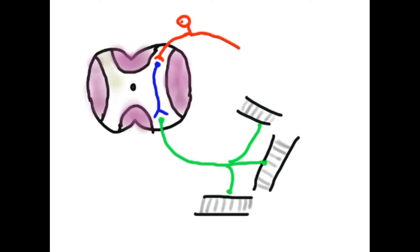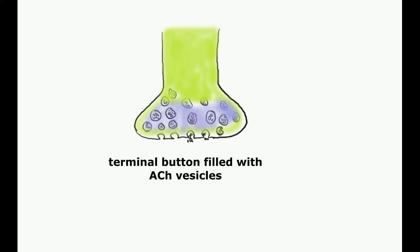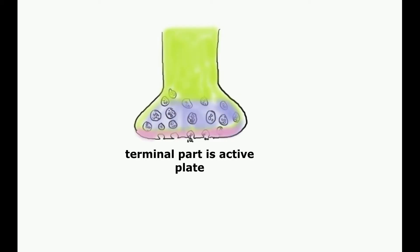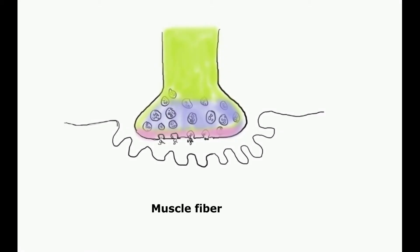This is called a motor unit. The terminal part of the motor neuron has the active zone where the acetylcholine neurotransmitter releases via exocytosis via SNARE protein upon calcium influx in the terminal part of the neuron.